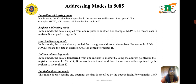In indirect addressing mode, data is transferred from one register to another using the address pointed to by a register. For example, MOV C, M means data is transferred from the memory address pointed to by the register pair to register C. In implied (or implicit) addressing mode, no operand is required — the data is specified by the opcode itself. Examples include CMA (complement accumulator), RRC (rotate accumulator A right by one bit), and RLC (rotate accumulator A left by one bit).